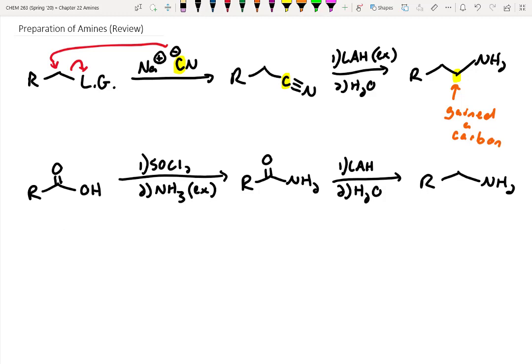We also saw how to make amines from aromatic molecules. Specifically, if we start with benzene, we can't just add on an NH2 group directly. However, what we can do is we can nitrate it using nitric acid and sulfuric acid to make nitrobenzene.